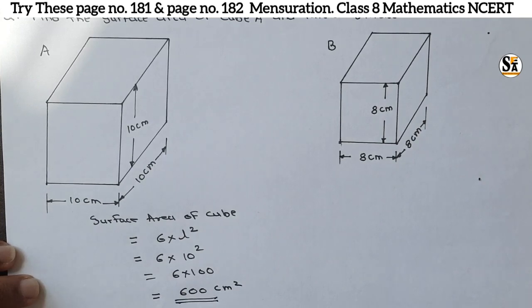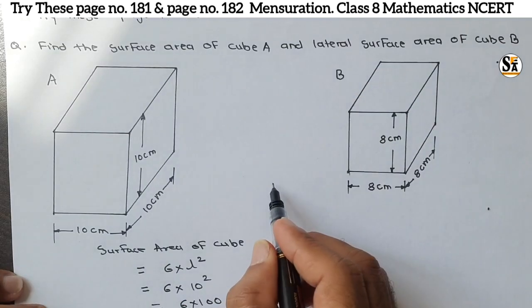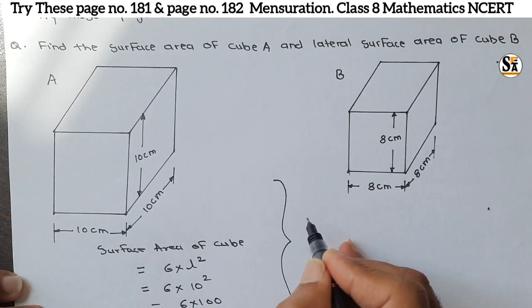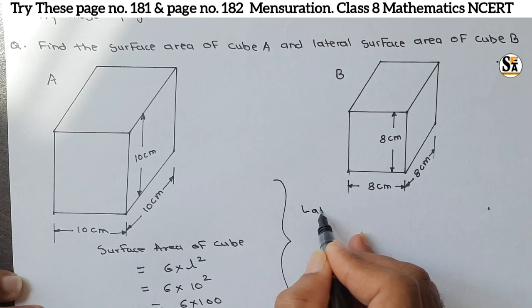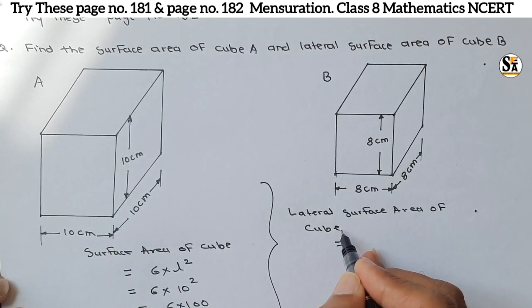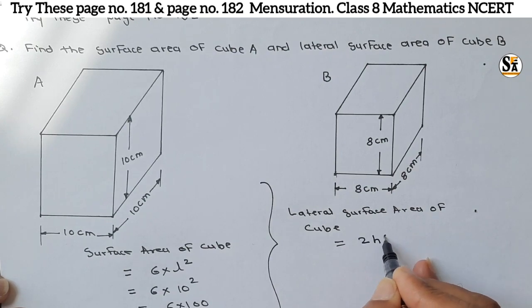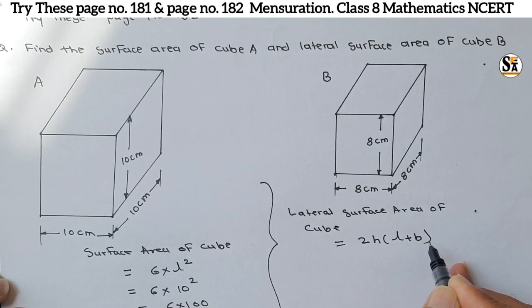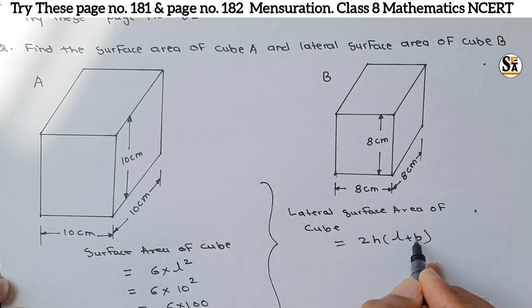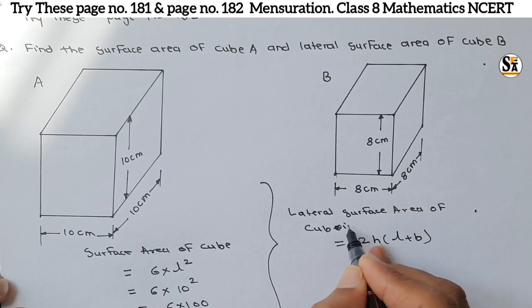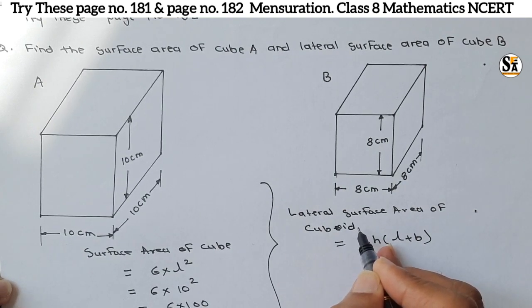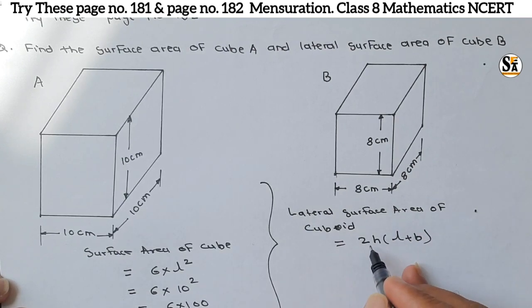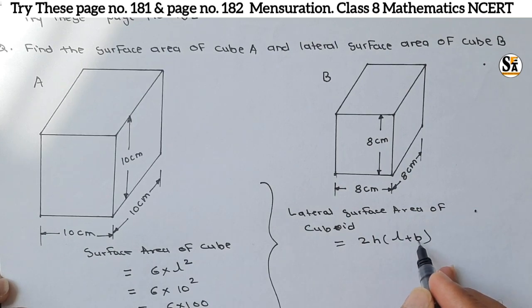Now for the lateral surface area. The lateral surface area of a cuboid is 2h into (l plus b). For a cube, h, l, and b are all the same, so we can derive a simplified formula.